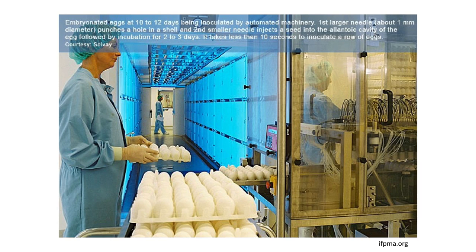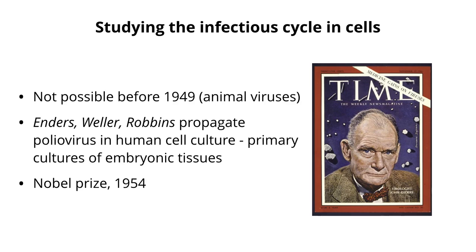Studying the infectious cycle in cells wasn't possible before 1949. In that year, three scientists at Harvard Medical School — Enders, Weller, and Robbins — showed it was possible to grow polioviruses in human cell cultures. They took embryonic tissues, minced them up, and made single cell cultures, showing that poliovirus actually grew in them. For this, they received the Nobel Prize in 1954. This revolutionized virology.